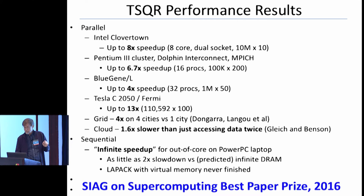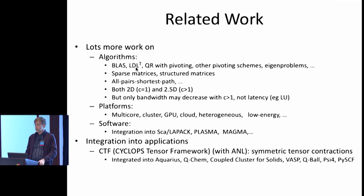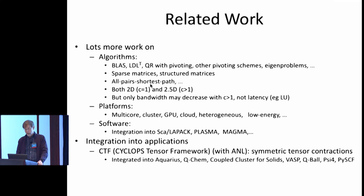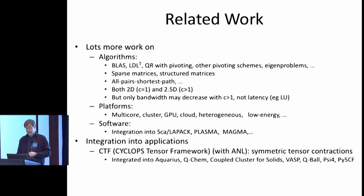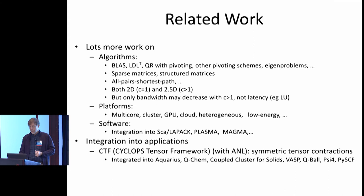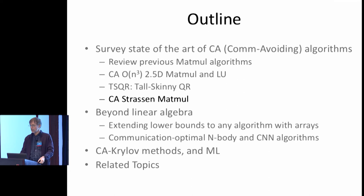The same speedups apply to the SVD of tall skinny matrices: do QR first, then SVD on the small R factor. We've done this work for all the BLAS, symmetric indefinite factorizations, QR with pivoting, eigenvalue problems, and sparse matrices depending on sparsity structure. Former student Edgar Solomonik at UIUC built the Cyclops Tensor Framework for tensor contractions, now integrated into many quantum chemistry codes. All of this works for Strassen too.